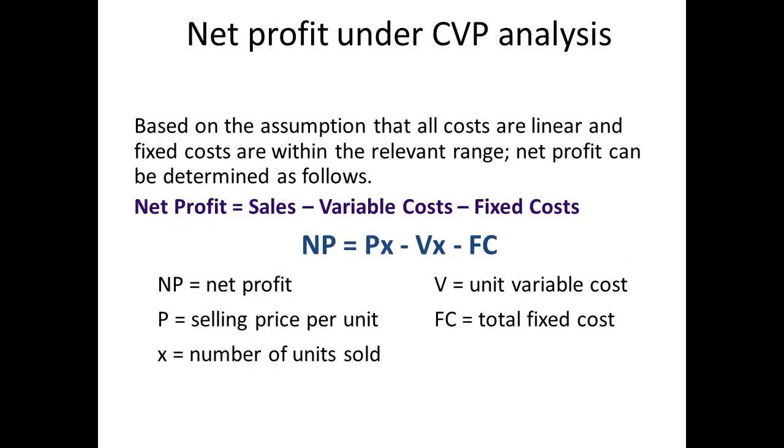Based on the assumption that all costs are linear, the net profit is equal to sales less variable costs less fixed costs. In the formula shown, x is equal to the number of units sold, so NP equals Px minus Vx minus Fc.